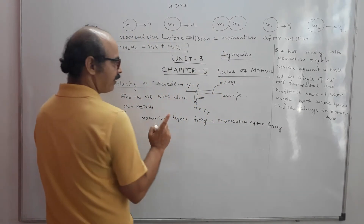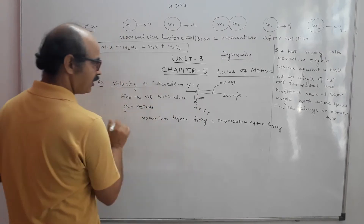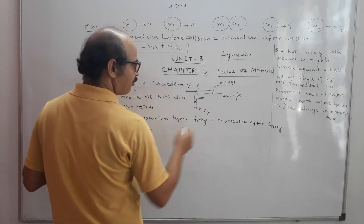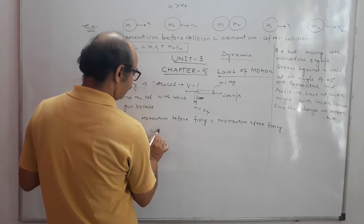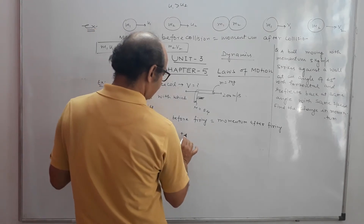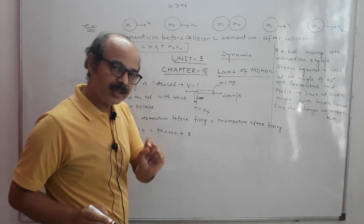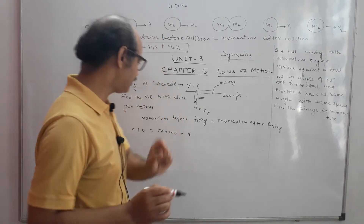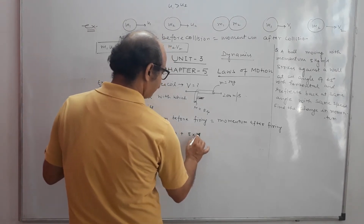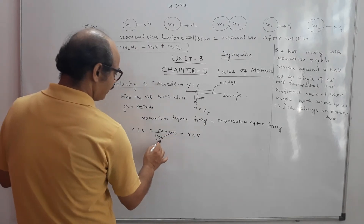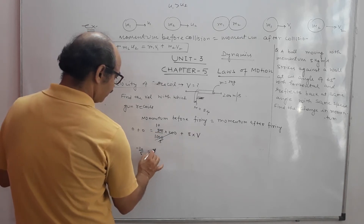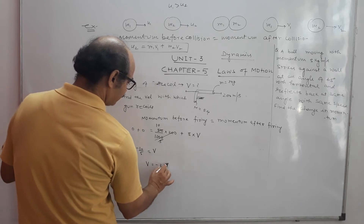Before firing, both the gun and bullet were at rest, so the total momentum was zero — bullet's momentum was 0 and gun's momentum was 0. After firing, bullet's momentum is 50g (converted to kg: 0.05 kg) into 200, plus gun's momentum which is 5 times V. Solving: 0 = 10 + 5V, so V = minus 10 by 5, which equals minus 2 meters per second.